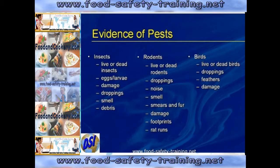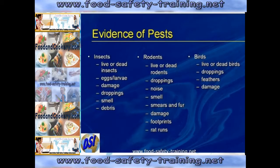Domestic pets are also to be regarded as pests because they carry a lot of bacteria on their skin, in their fur, in their mouth, and in their droppings. So dogs, cats and domestic birds are to be regarded as pests. Think about the way a dog or cat cleans themselves — they lick themselves and if you touch their fur your hands become contaminated. Even at home, keep pets well away from the kitchen and wash your hands thoroughly before re-preparing food.